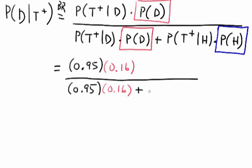And the probability of testing positive given health is 0.05. And then again, the probability of being healthy given that you have tested positive once we determined is 1 minus 0.16 or 0.84.